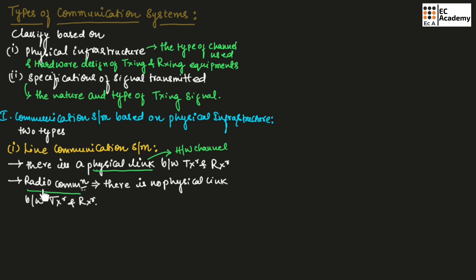In radio communication, there is no physical link between transmitter and receiver. But in line communication, there will be a physical link. In radio communication, natural resources — a software channel such as space and water — will act as the link between transmitter and receiver, as we understood in our previous lecture.